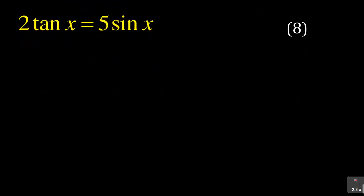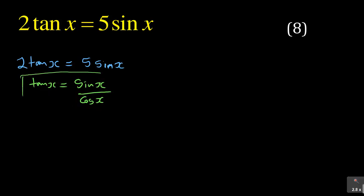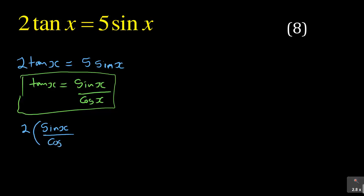We are given 2tan(x) = 5sin(x). The first thing is you need to know your trig algebra. What you know is the identity for tan — tan(x) is equal to sin(x) over cos(x). That is what you are going to substitute where there is tan. So if we use this identity, we are going to have 2 times (sin(x)/cos(x)) is equal to 5sin(x).